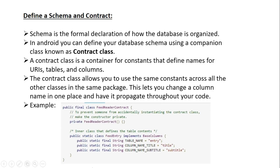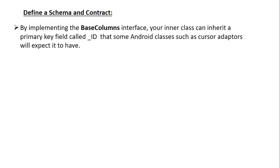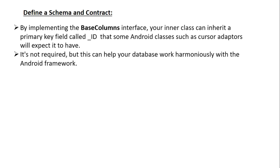Here is a simple example of a contract class. The class name is FeedReaderContract. To avoid accidental instantiation, we provide a private default constructor. Inside, we create an inner class called FeedEntry that implements BaseColumns. The constants defined here include the table name and two column names: title and subtitle. By implementing the BaseColumns interface, your inner class can inherit a primary key field called _ID that some Android classes such as CursorAdapter need. This is not required, but it helps your database work harmoniously with the Android framework.